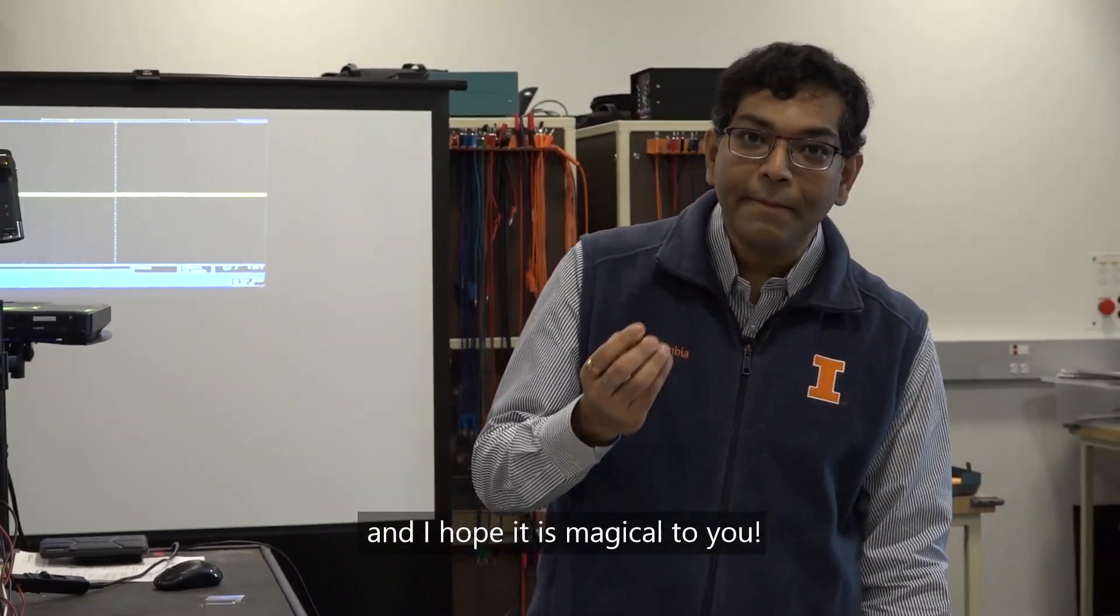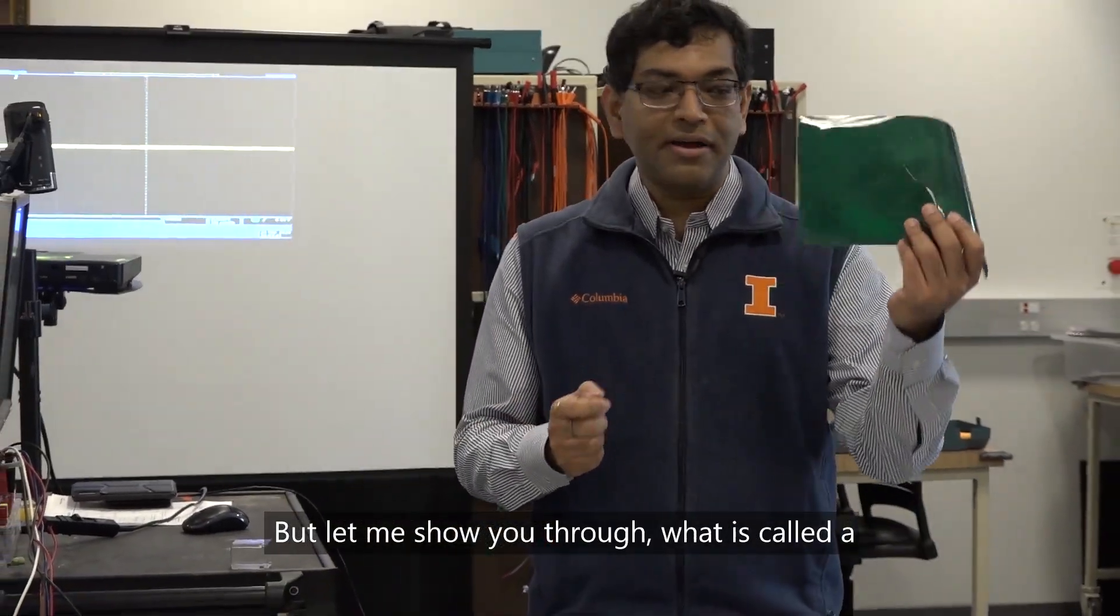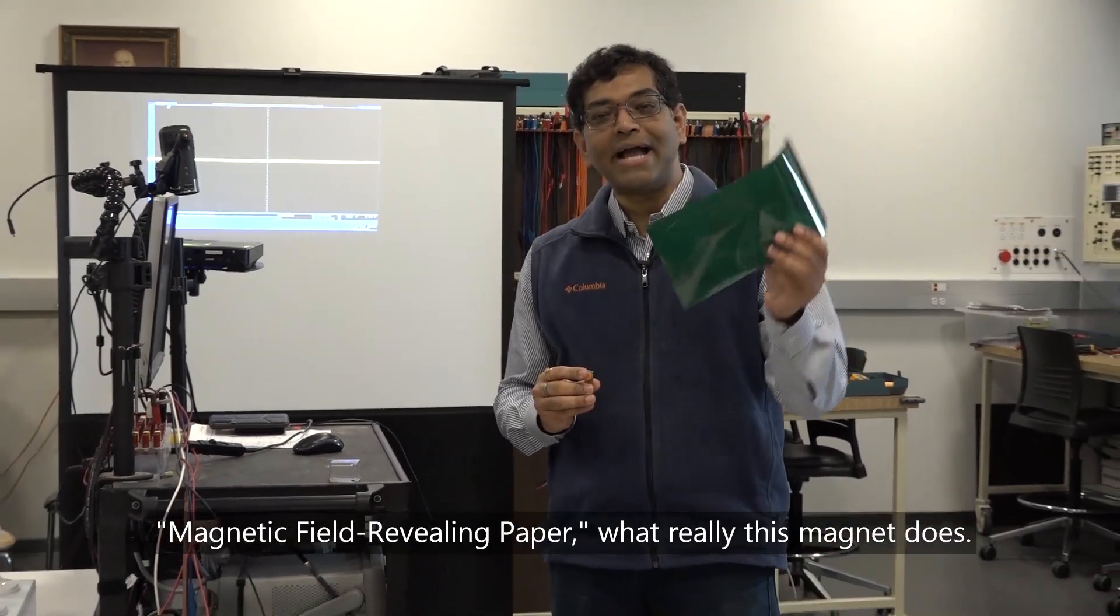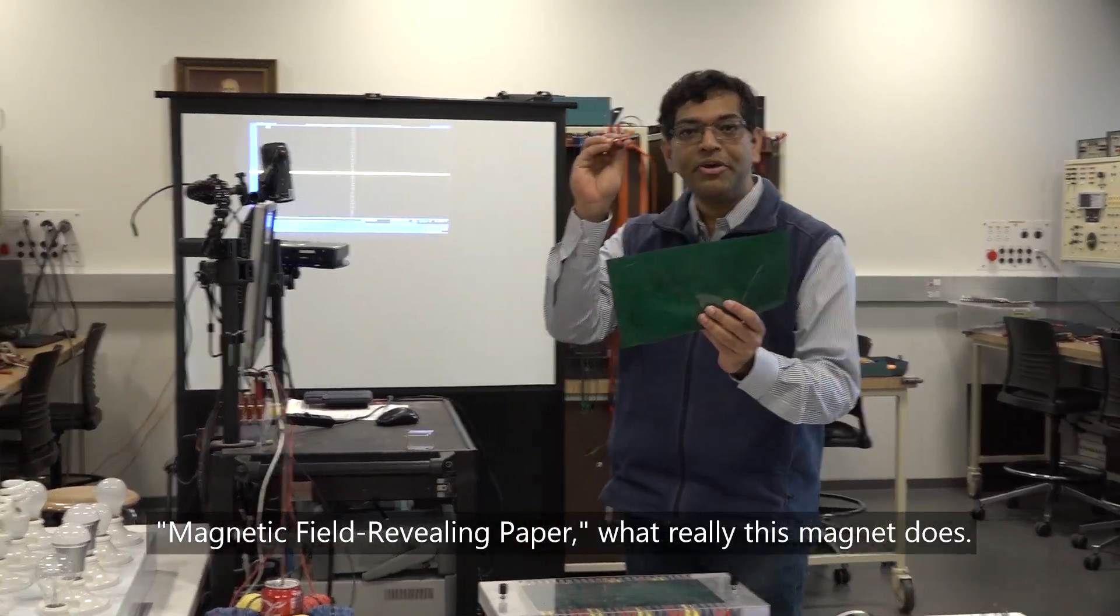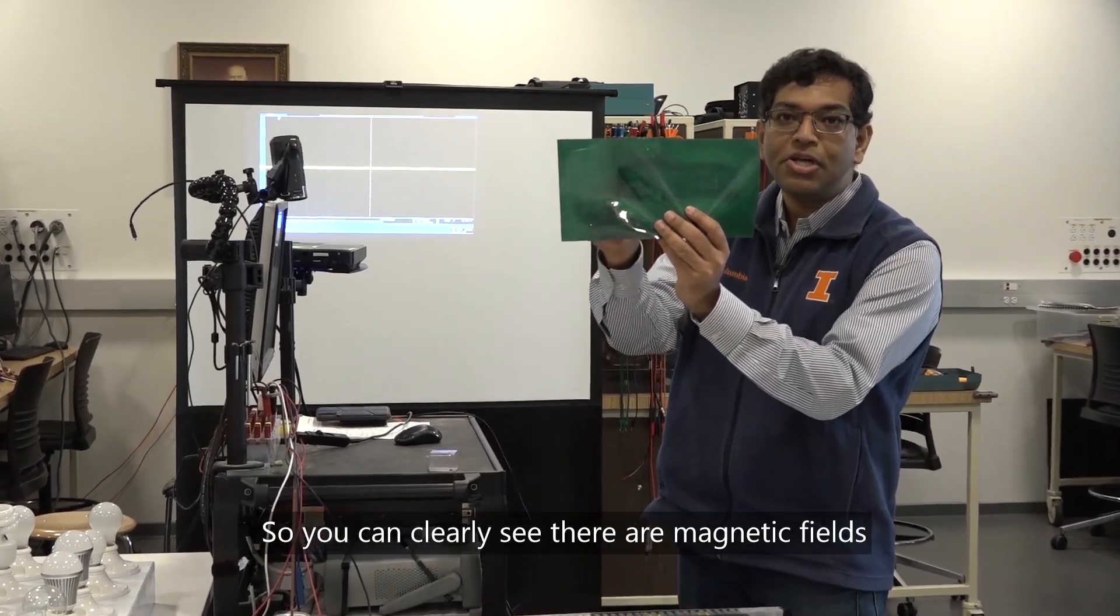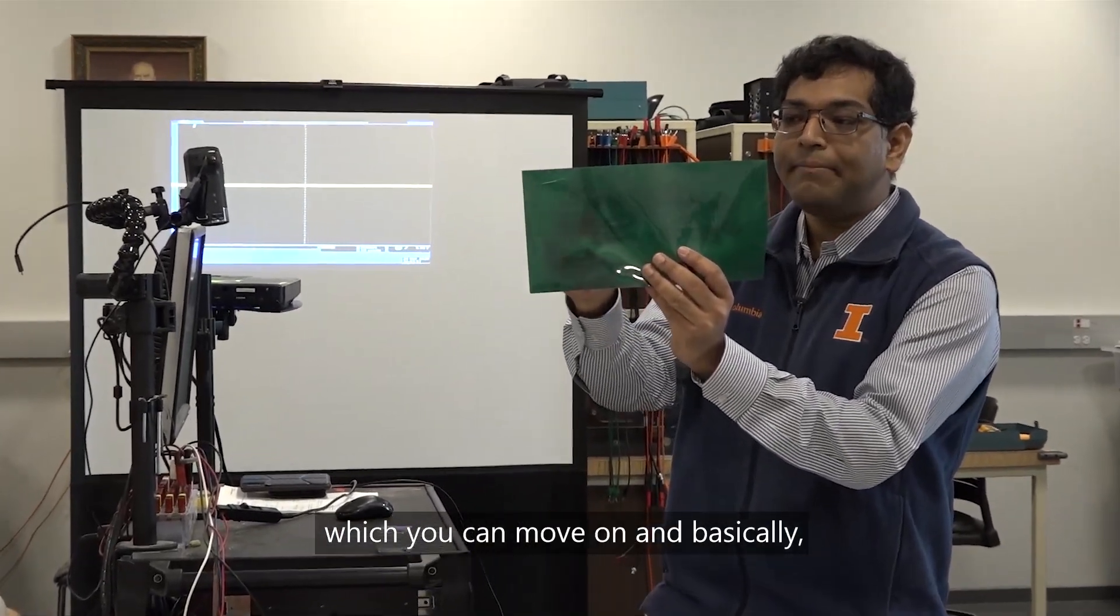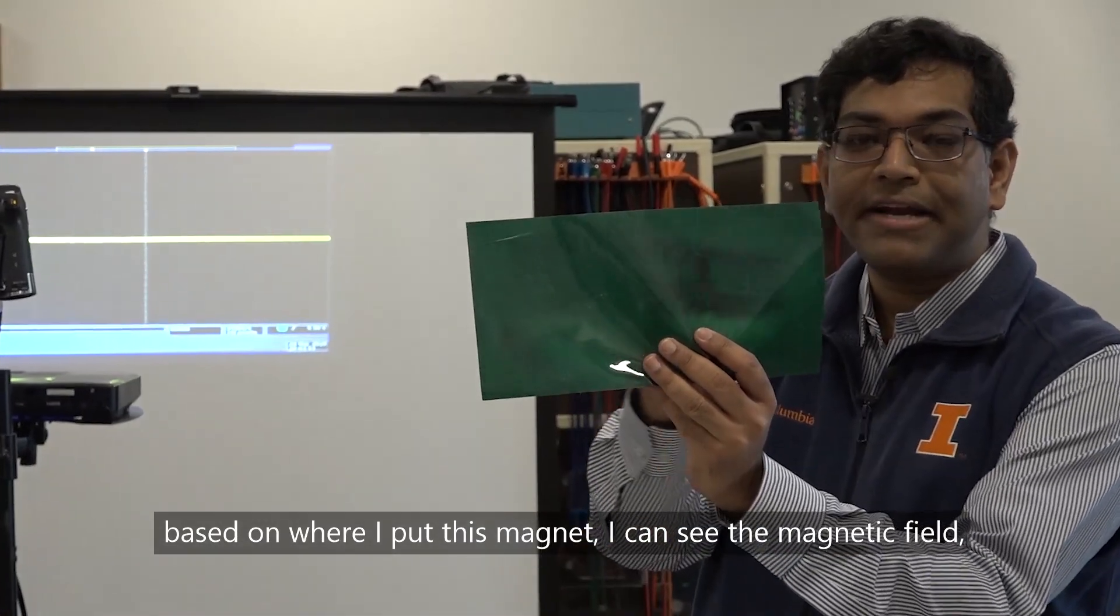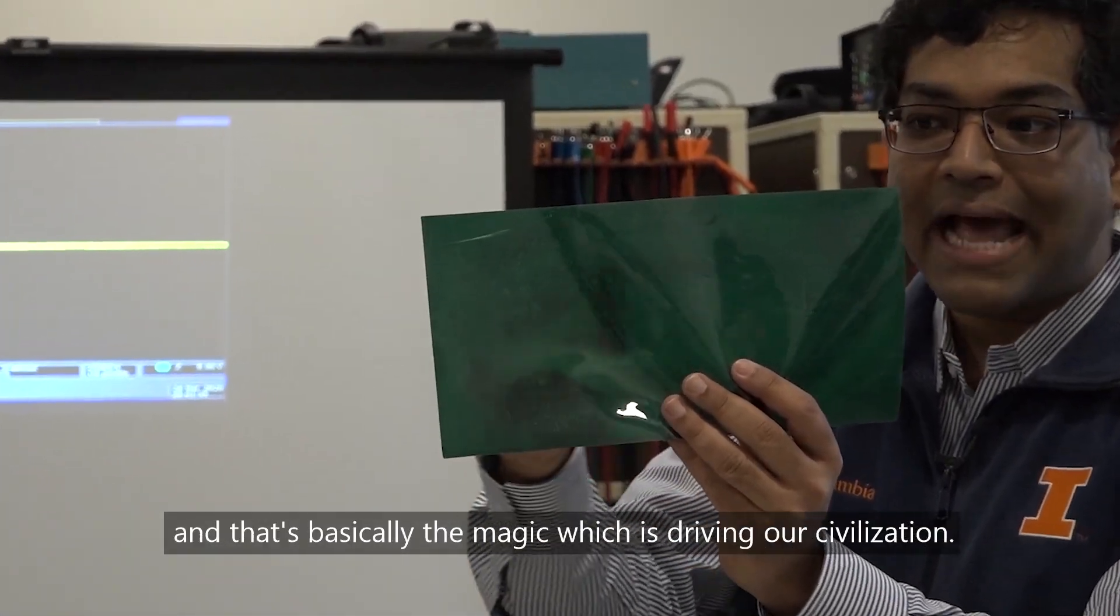I hope it is magical to you, but let me show you what this magnet does through what is called a magnetic field revealing paper. You can clearly see there are magnetic fields which you can move on, and based on where I put this magnet, I can see the magnetic field.